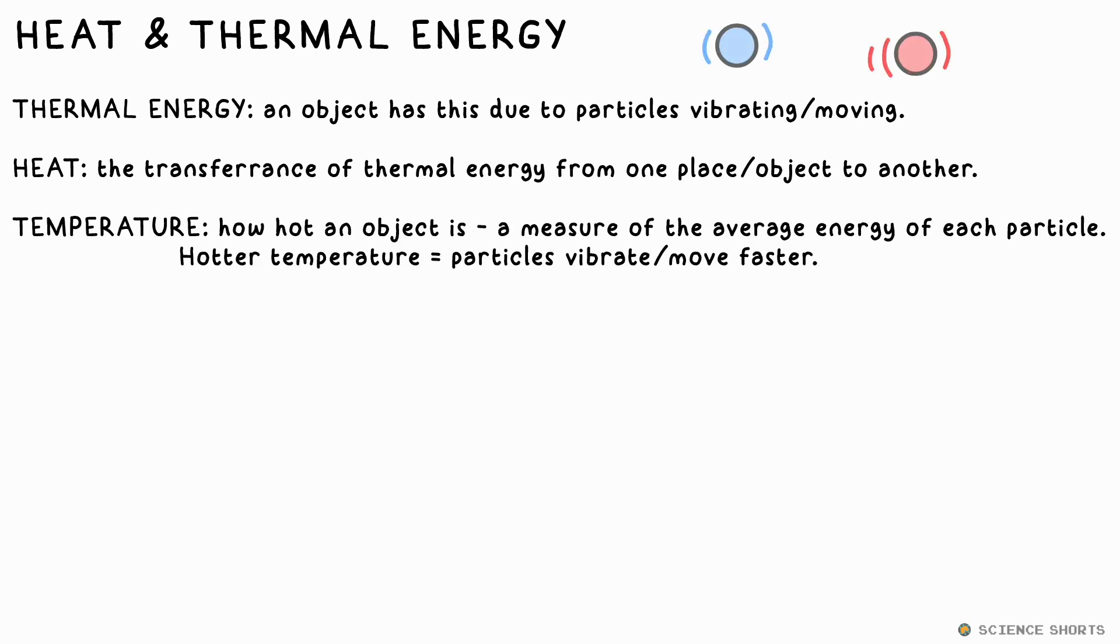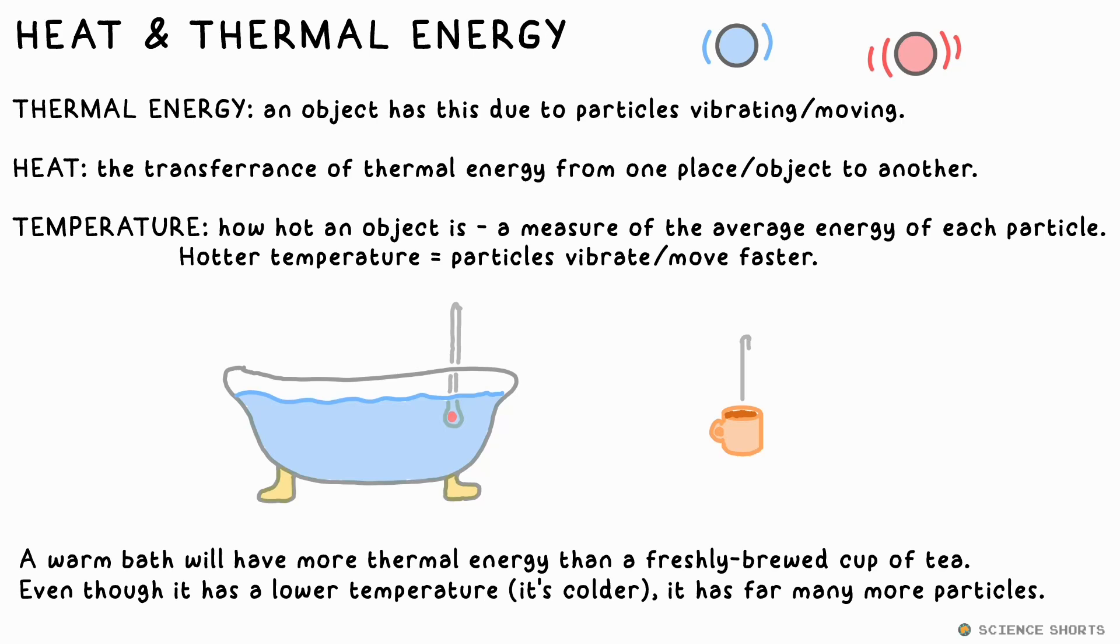Particles that are hotter have more thermal energy, they vibrate or move faster. The amount of thermal energy an object has depends on both its temperature, which tells you how much energy each particle has, and how many particles there are in said object.